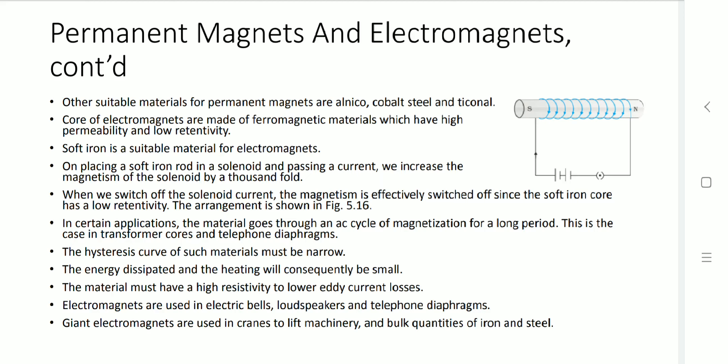To design the core of electromagnets, these are made of ferromagnetic material which has high permeability and low retentivity. Soft iron is suitable to design the core of an electromagnet. By placing a soft iron rod in a solenoid and passing current, we can increase the magnetism of the solenoid by a thousand-fold. When we switch off the solenoid current, the magnetism is effectively switched off since the soft iron core has low retentivity. This is used for transformer cores and telephone diaphragms.